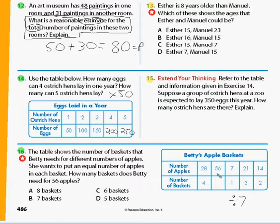21 divided by seven is three, because three times seven is 21. So that tells us that she's going to need eight baskets to do this.